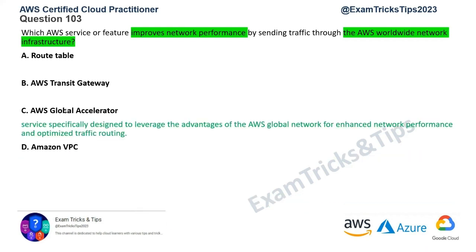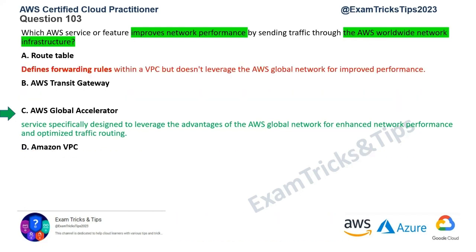Looking at the other options: the route table is for forwarding rules — it's a mapping of traffic in and out with respect to IP addresses and rules defined for VPC. It doesn't leverage any global network for improved performance, so option A is wrong. Transit Gateway's use case is connecting VPCs and on-premises networks, but it doesn't do optimized routing across the broader AWS network — that specific use case is not what we want here, so that's wrong.